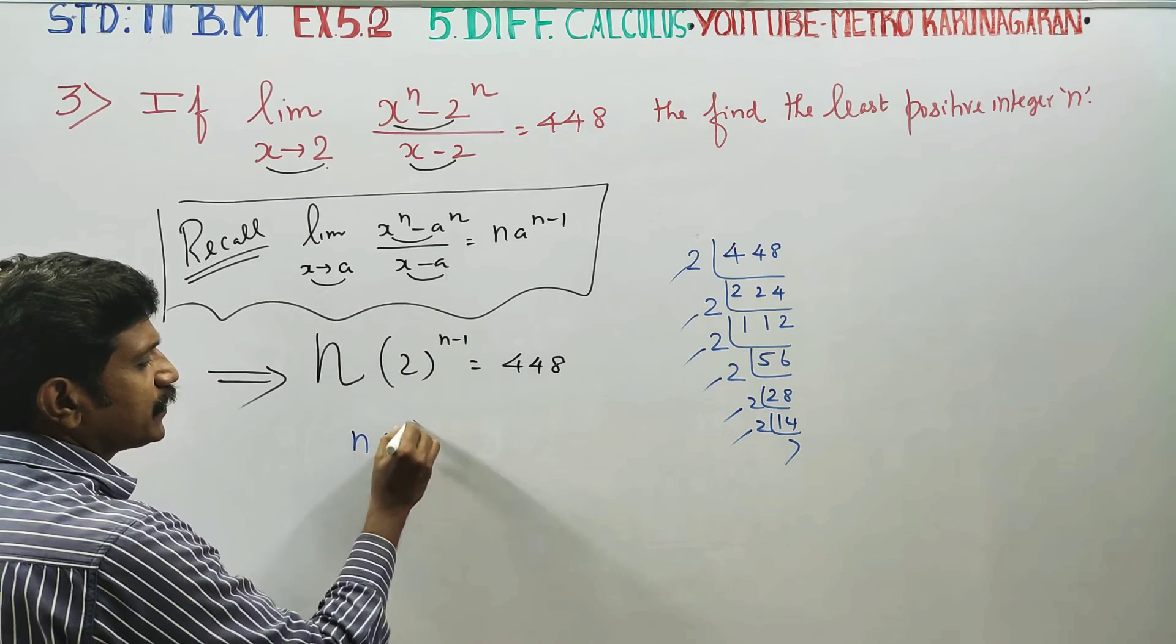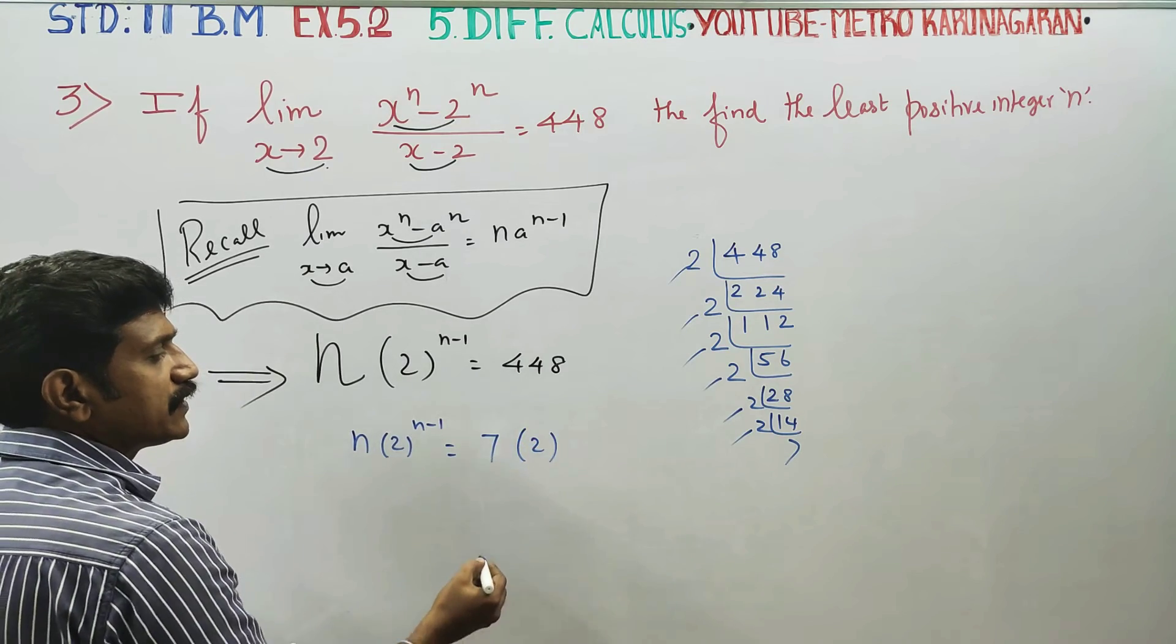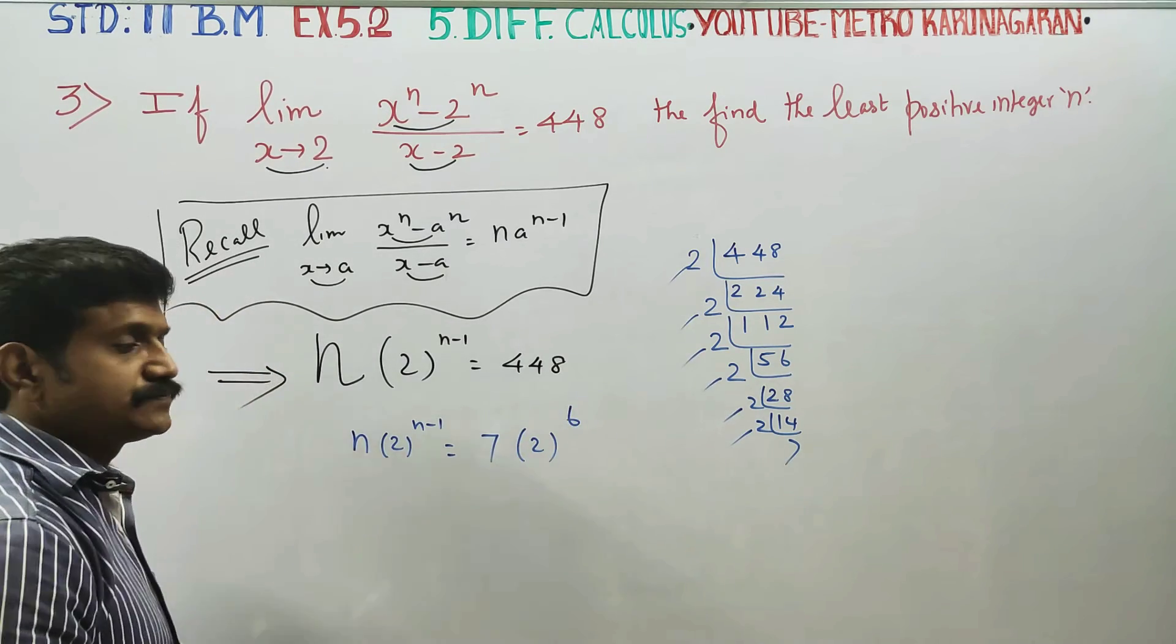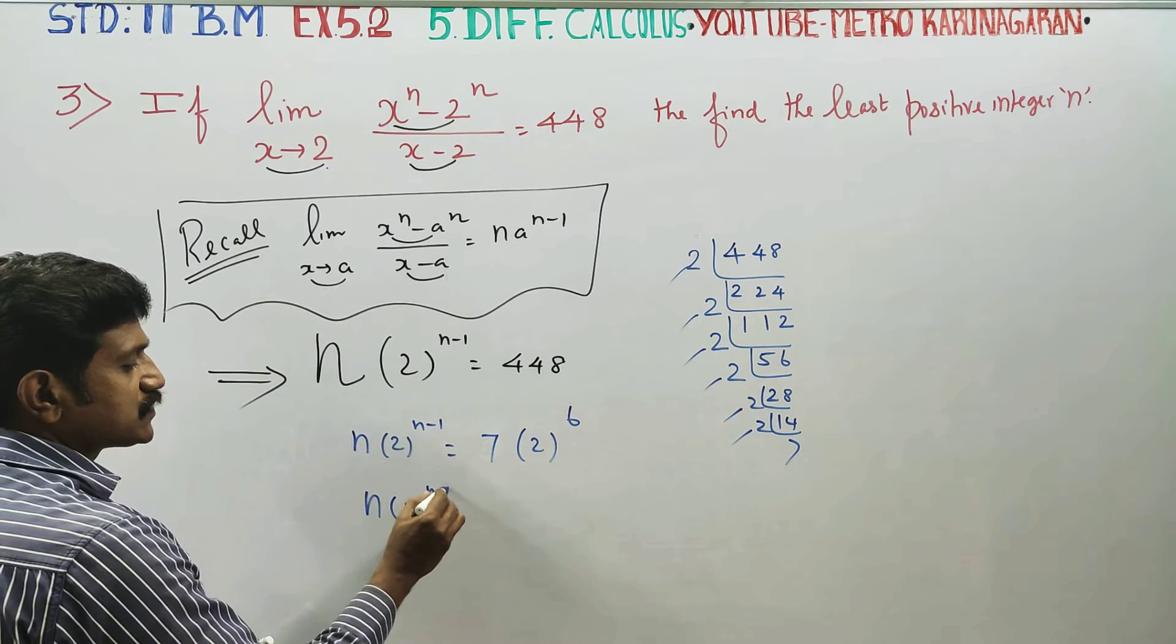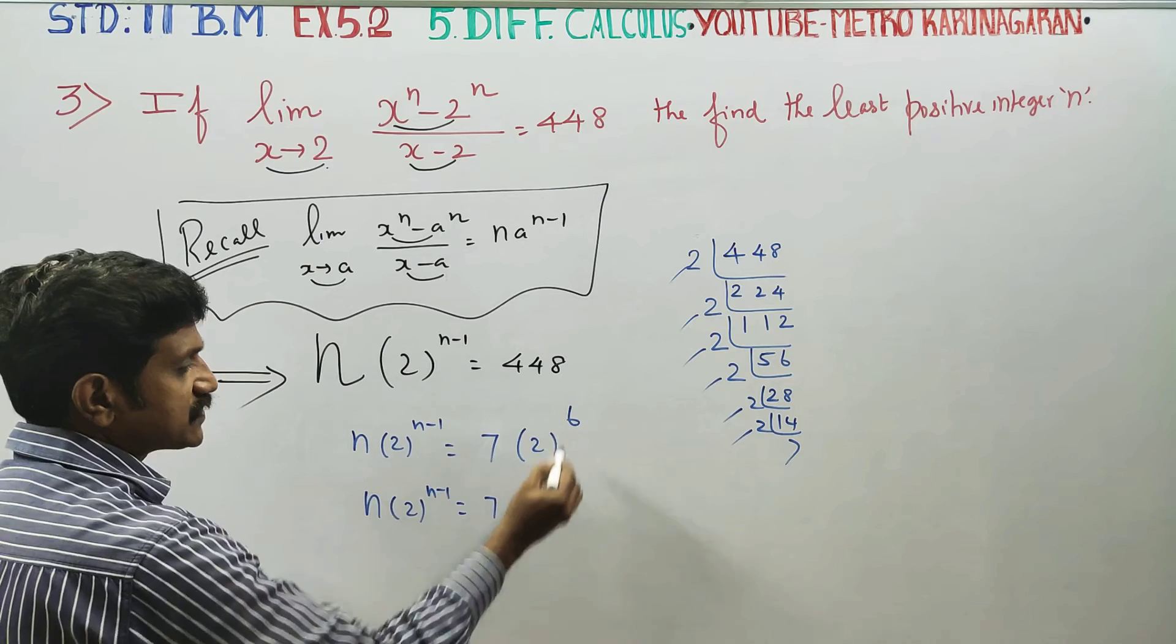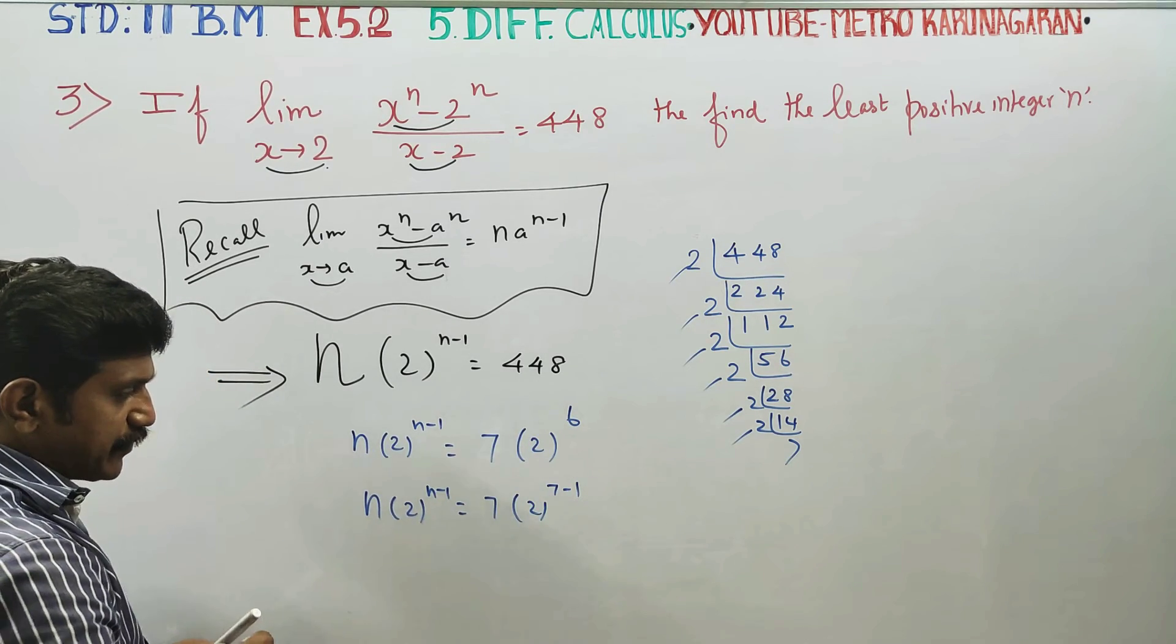So n times 2 power n minus 1 equals 7 times 2 power 6. On the left side we have n and 2 power n minus 1, on the right we have 7 and 2 power 6. Notice that 7 minus 1 equals 6, so everything matches perfectly.